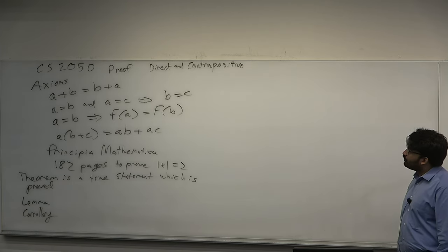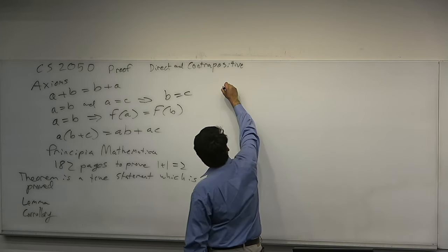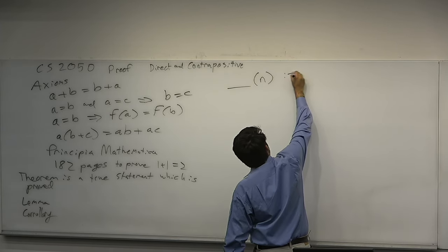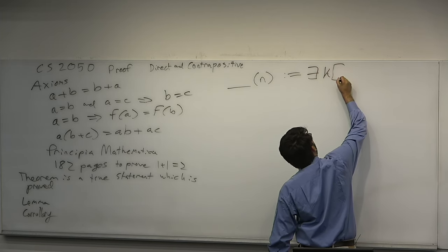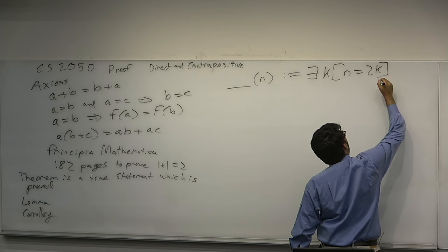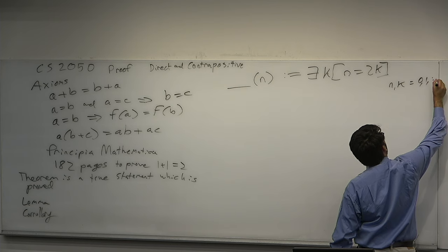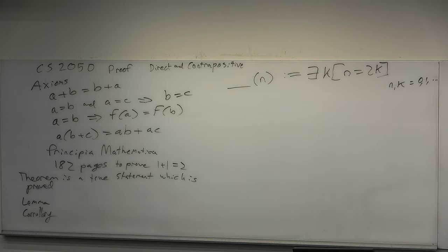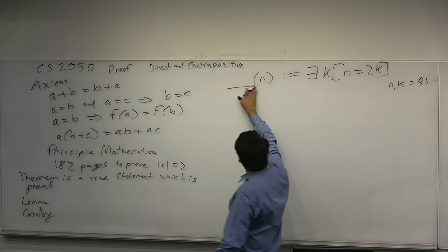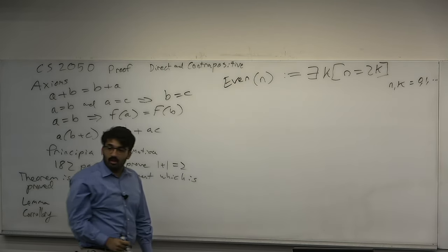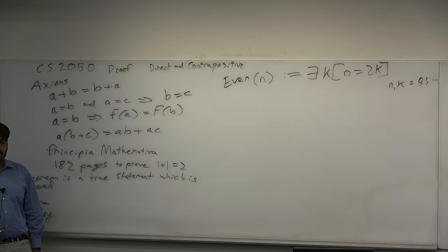Let's do some examples of proof. First, define the following predicate: it takes input n, and is defined as: there exists a k such that n equals 2 times k, where n and k are non-negative integers. Any number that satisfies this predicate is an even number — in fact, the definition of an even number is one which satisfies this predicate. Any even number has 2 as a factor.